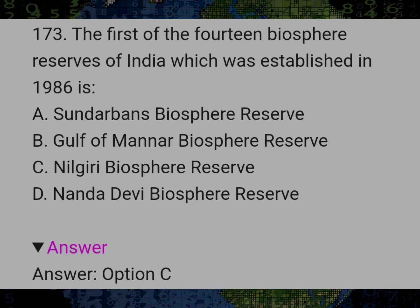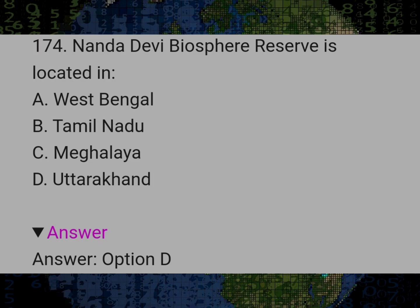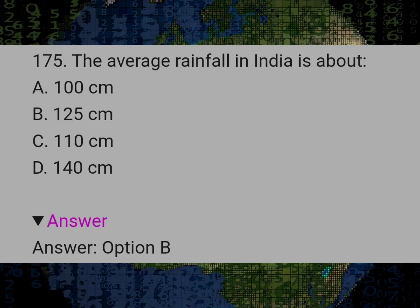The first of the 14 biosphere reserves of India which was established in 1986 is? Answer C: Nilgiri Biosphere Reserve. Nanda Devi Biosphere Reserve is located in? Answer D: Uttarakhand. The average rainfall in India is about? Answer B: 125 cm.